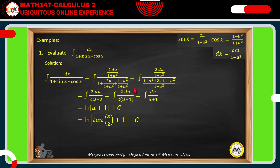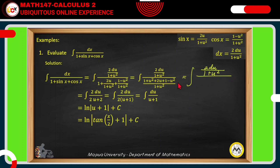We divide the LCD by the denominator of each fraction: 1 plus u squared divided by 1 gives 1 plus u squared times the numerator, giving 1 plus u squared; plus 1 times 2u, giving 2u; plus 1 times 1 minus u squared, giving 1 minus u squared. This can now be written as the integral of 2 du over 1 plus u squared, all over: combining u squared with negative u squared gives 0, so we have 2u plus 2, over 1 plus u squared.